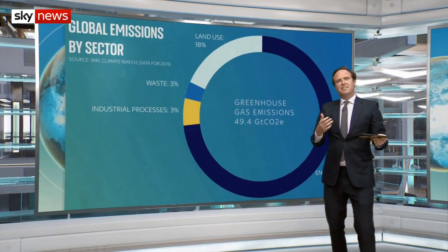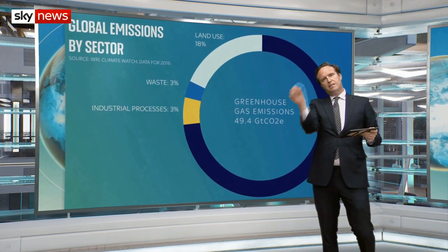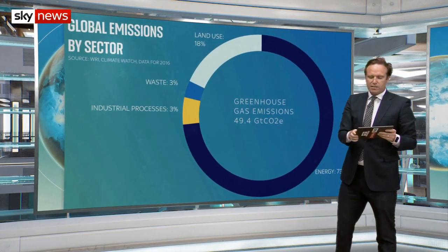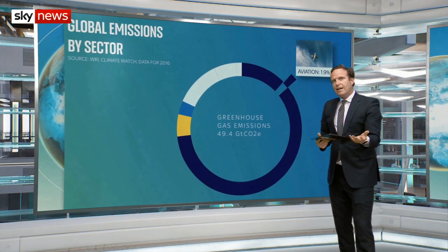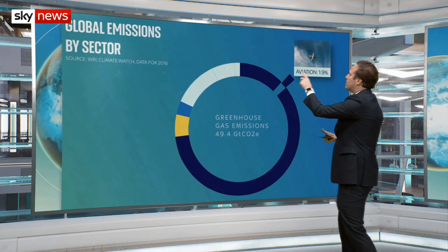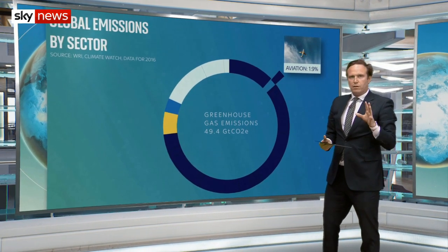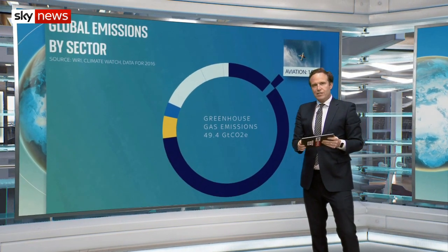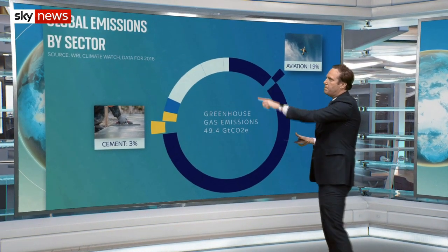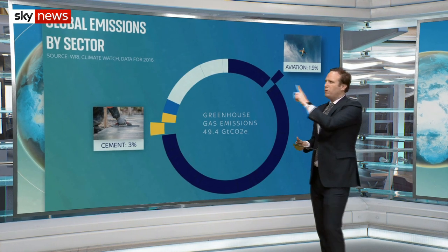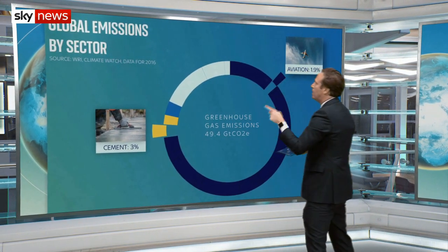It's worth taking a step back, because some of those numbers may look smaller than expected. We talk quite a lot about aviation — we need to fly less and try to offset those emissions — but aviation is about 1.9% of total global emissions. And actually, that's a little bit lower than cement. So we talk a lot about aviation, but we don't really talk that much about cement. I wonder whether we should be doing a bit more discussion about that.